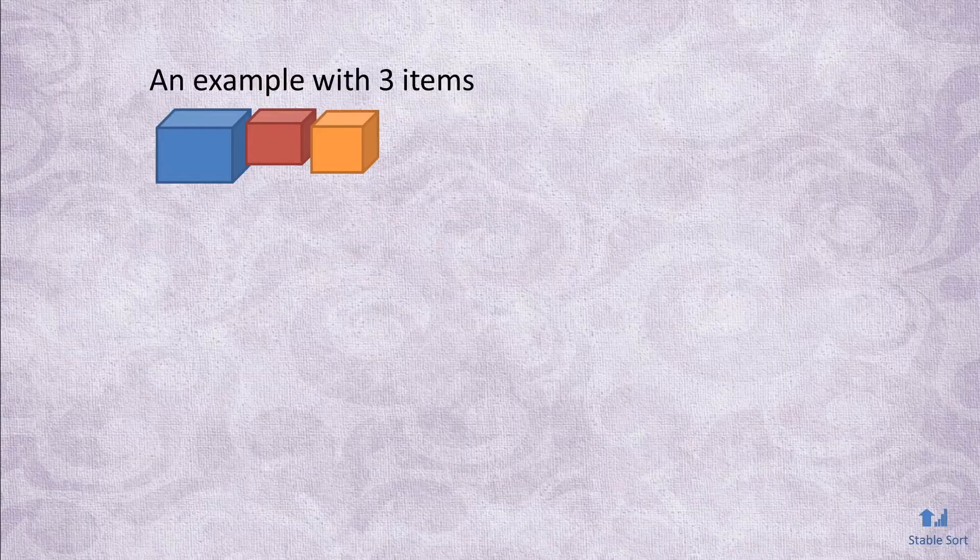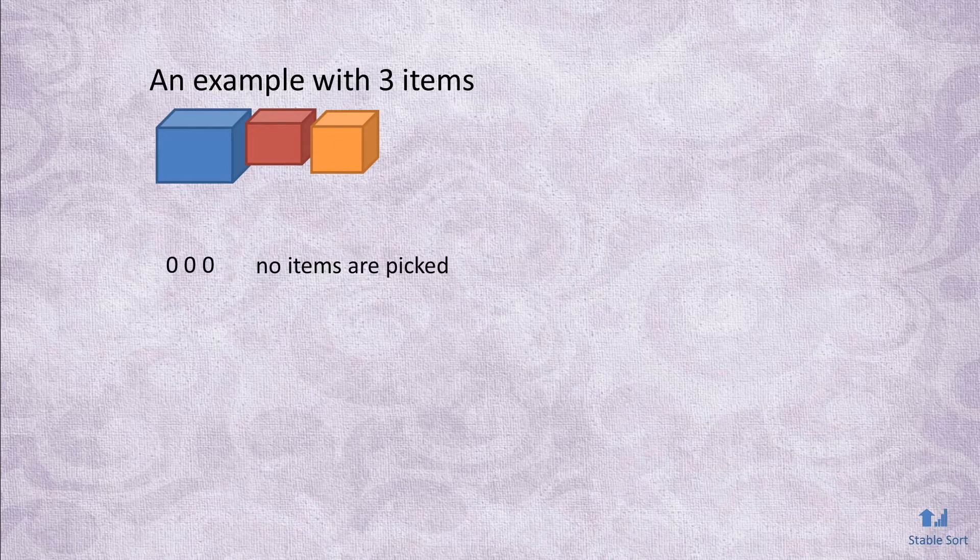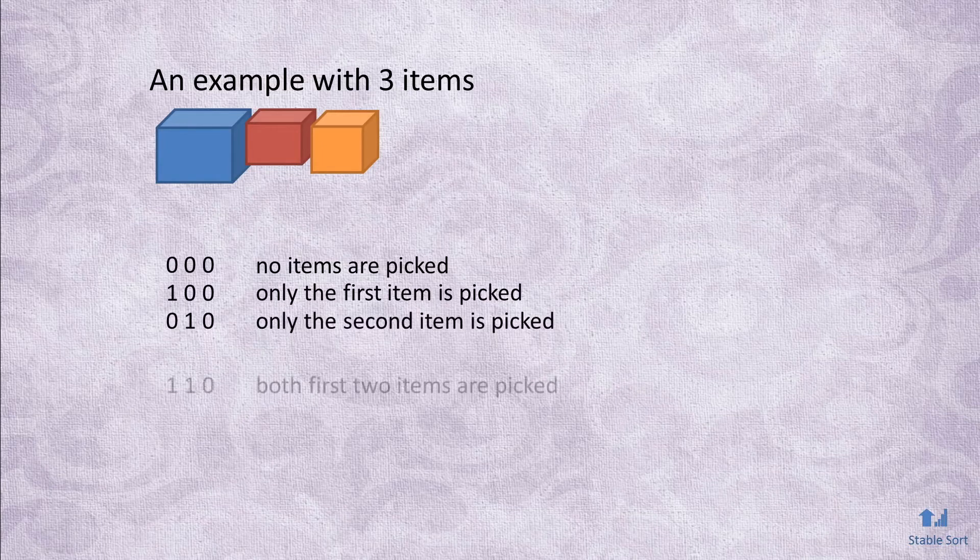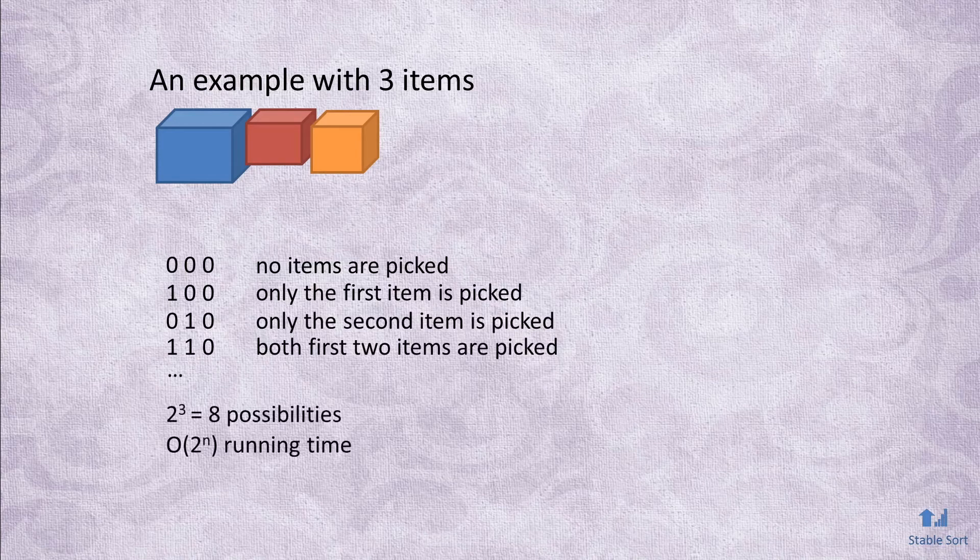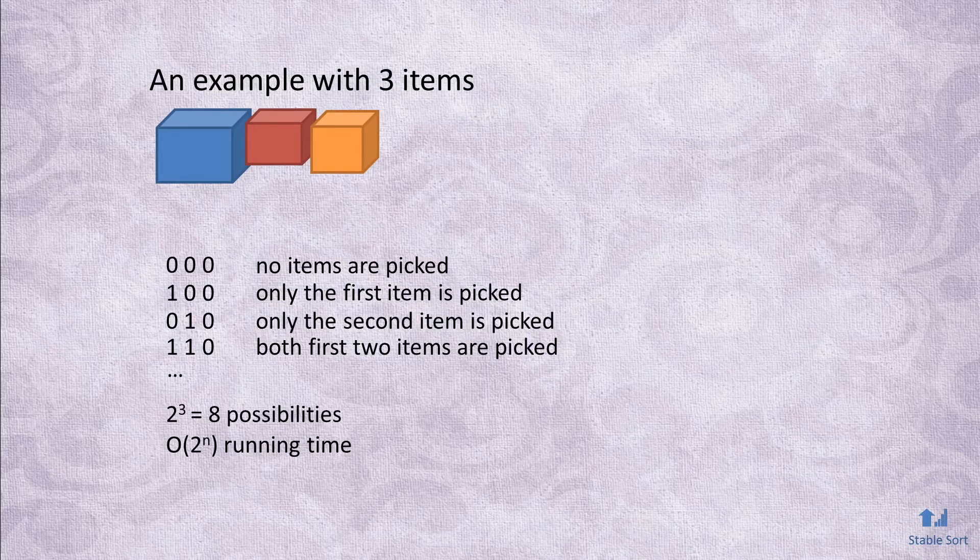For example, if we have three items, an output of 000 would mean that no items are picked. An output of 100 would mean that only the first item is picked, 010 would mean that only the second item is picked, and so on. You could see that with n items, there are 2 to the power of n possible outputs. So considering each one would result in an exponential running time and you'll never be able to leave the house before the cops show up.